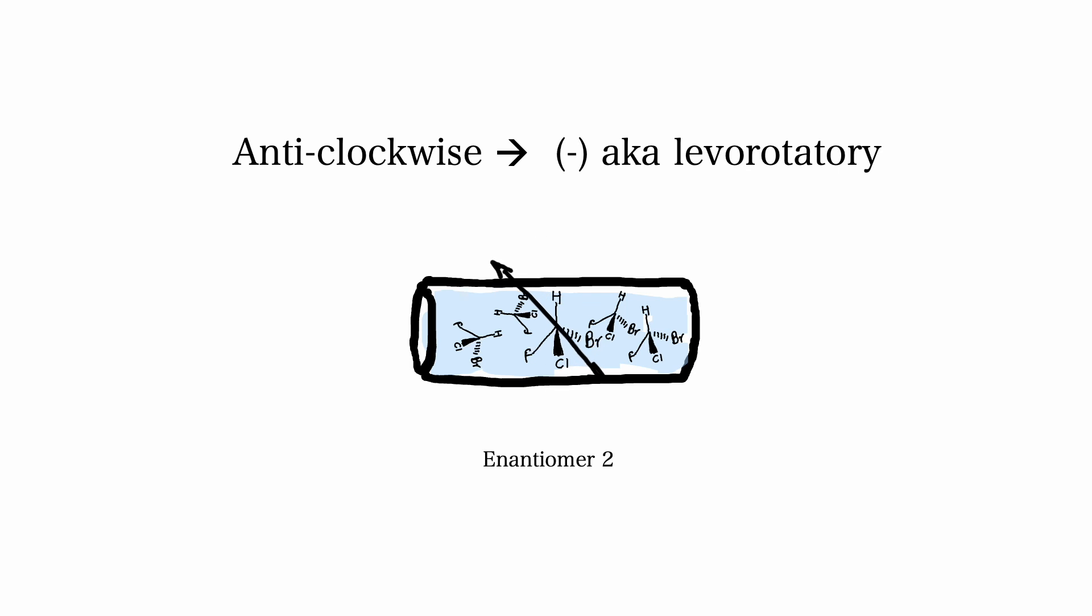The opposite of dextrorotatory is levorotatory. This is often abbreviated as an L or a negative sign. Levorotatory means that a molecule rotates plane polarized light in the counterclockwise direction.